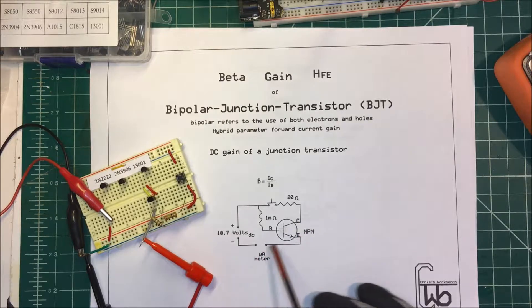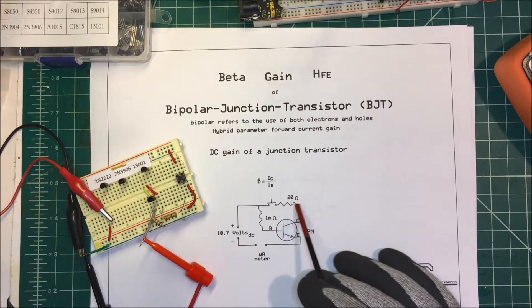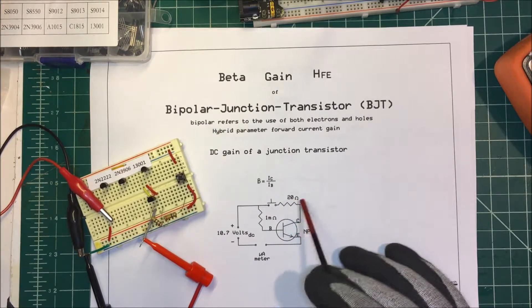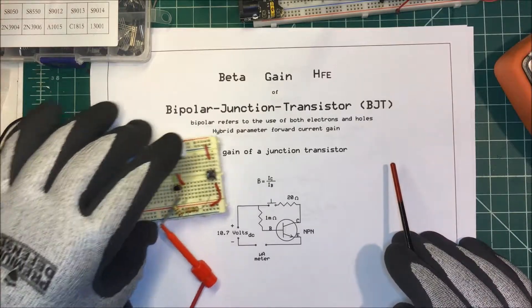Then I'm going to measure the current from the collector to the emitter through here. This 20 ohm resistor you can leave out—that's just a little bit of protection from the inrush current.